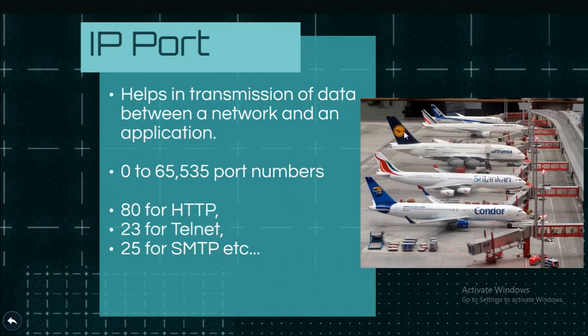For example, if you have a computer, you can install some new applications — you can install WhatsApp and Facebook applications. You can communicate using the IP address. WhatsApp is running on your IP address and it runs on a separate port. Facebook is also running on the same IP address, but on a different port. You can run multiple apps on one IP address using port numbers.